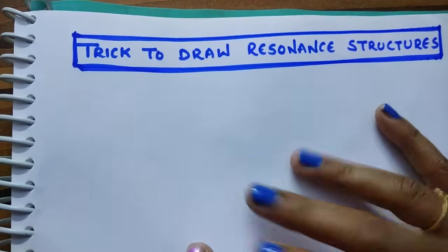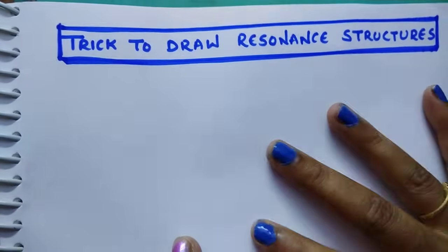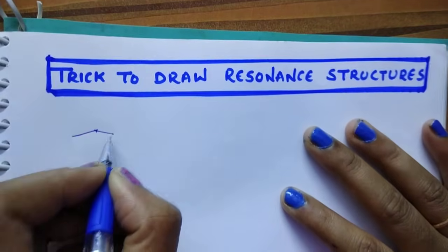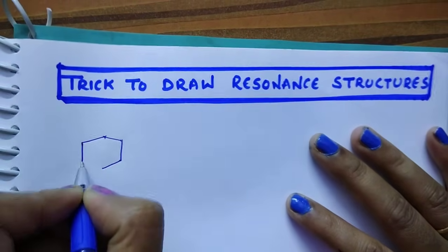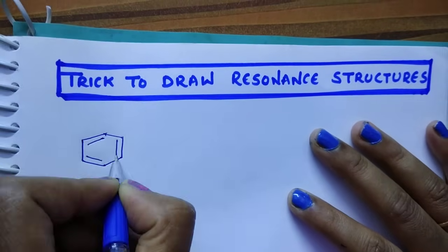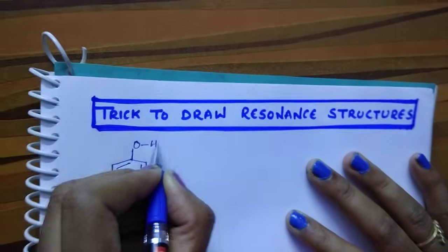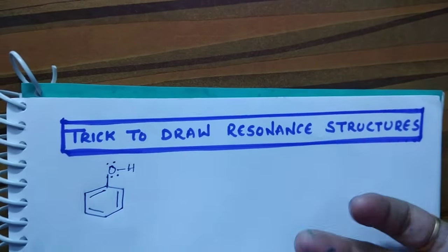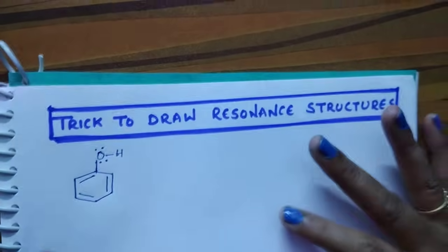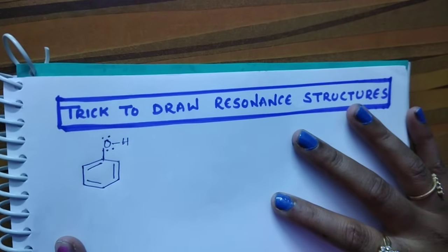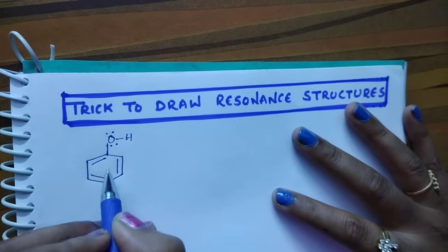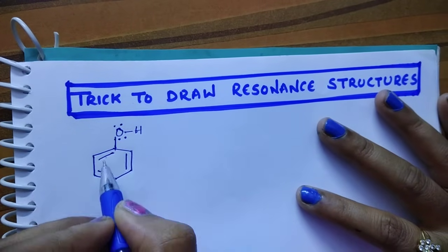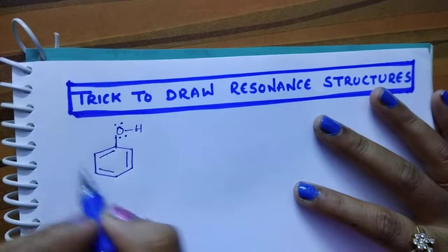Now in this session I am going to discuss the trick to draw resonance structures. Take phenol — how many resonance structures are possible? To know this, you should know how to draw the resonance structures. In my previous video I discussed that pi bond, sigma, and lone pair are in conjugation, so this molecule shows resonance.